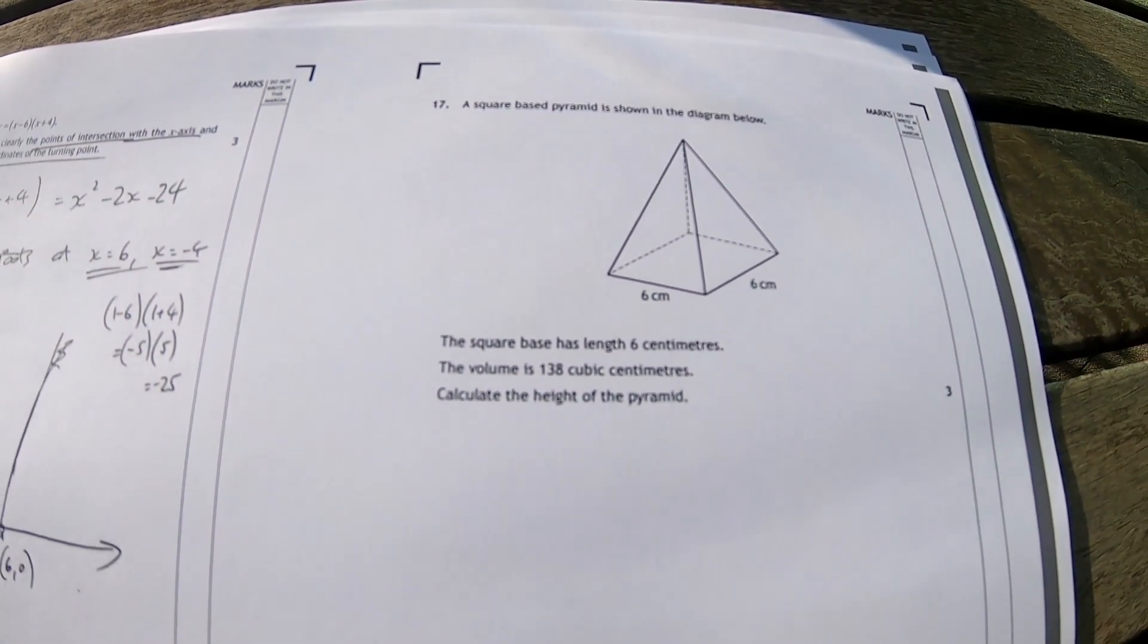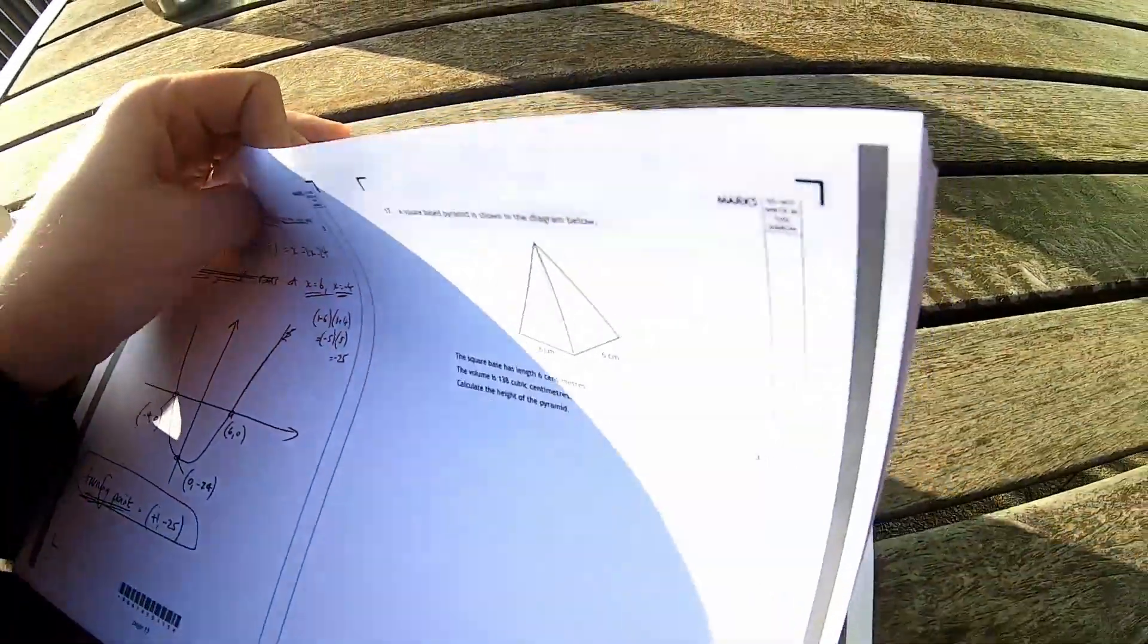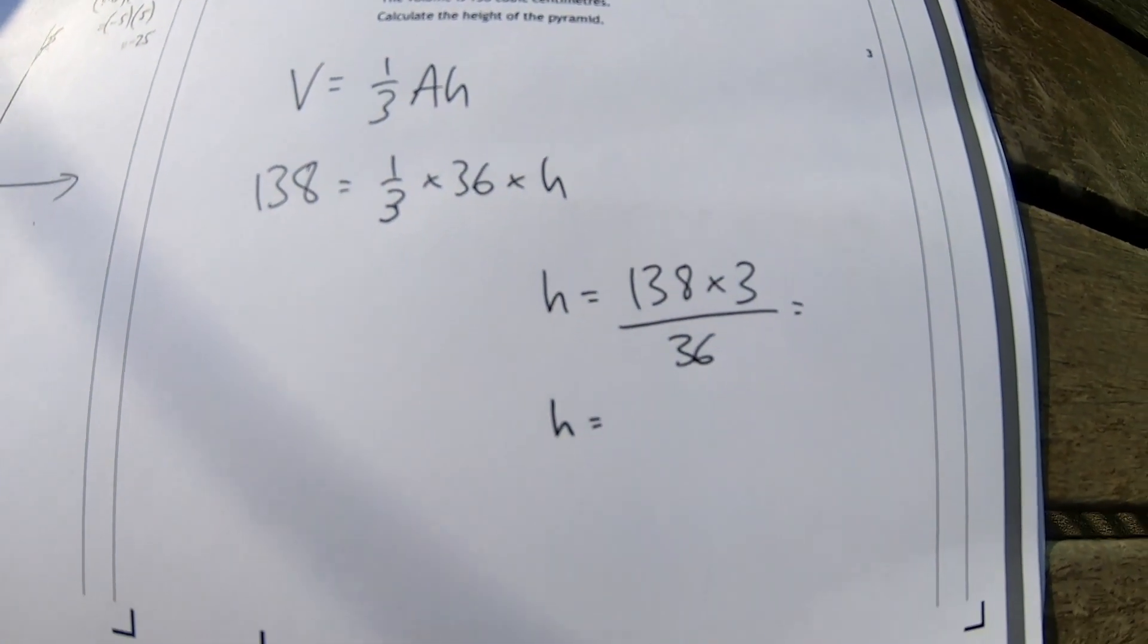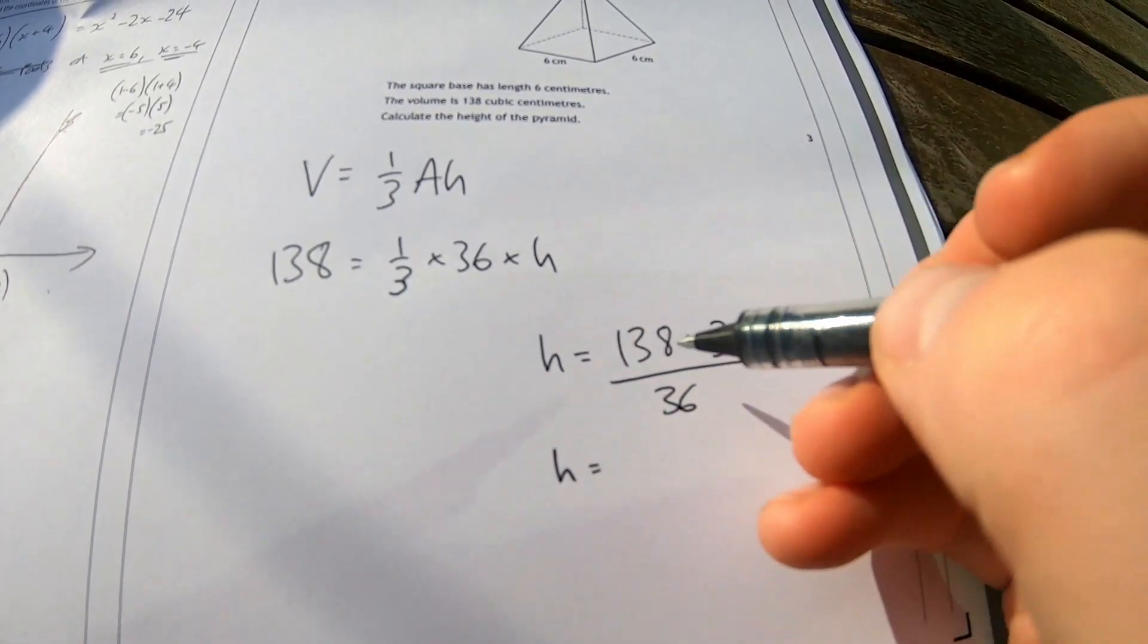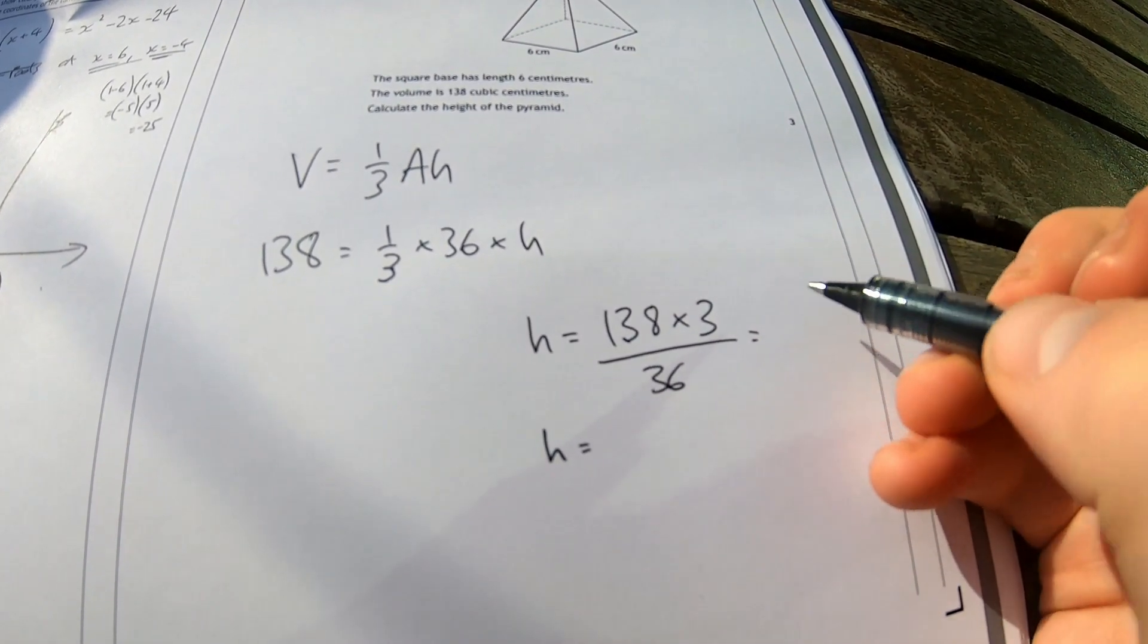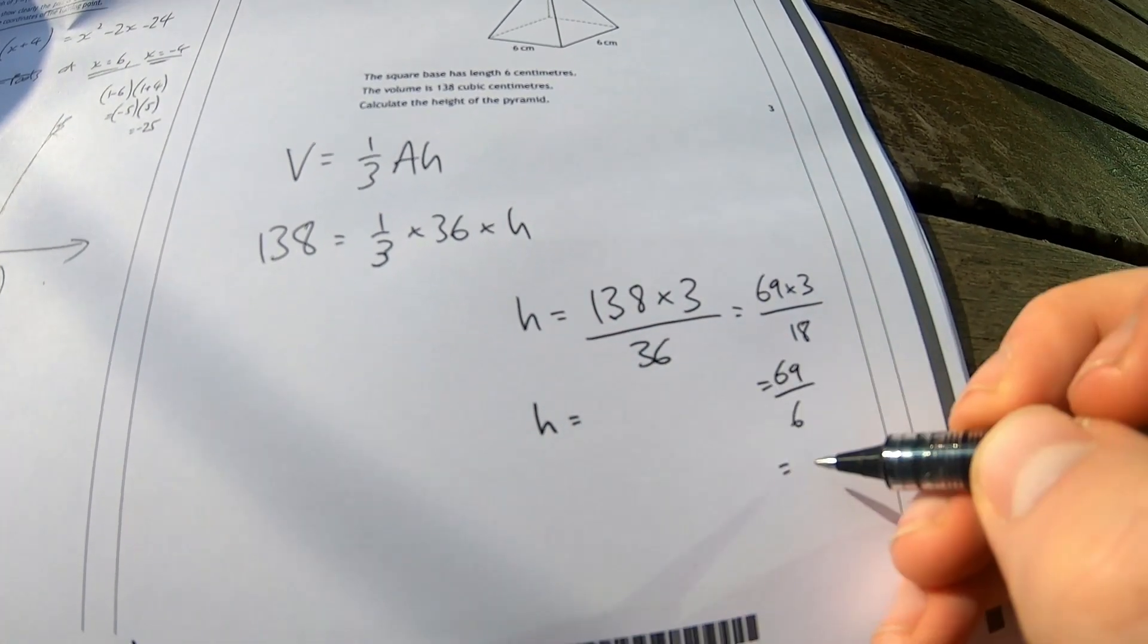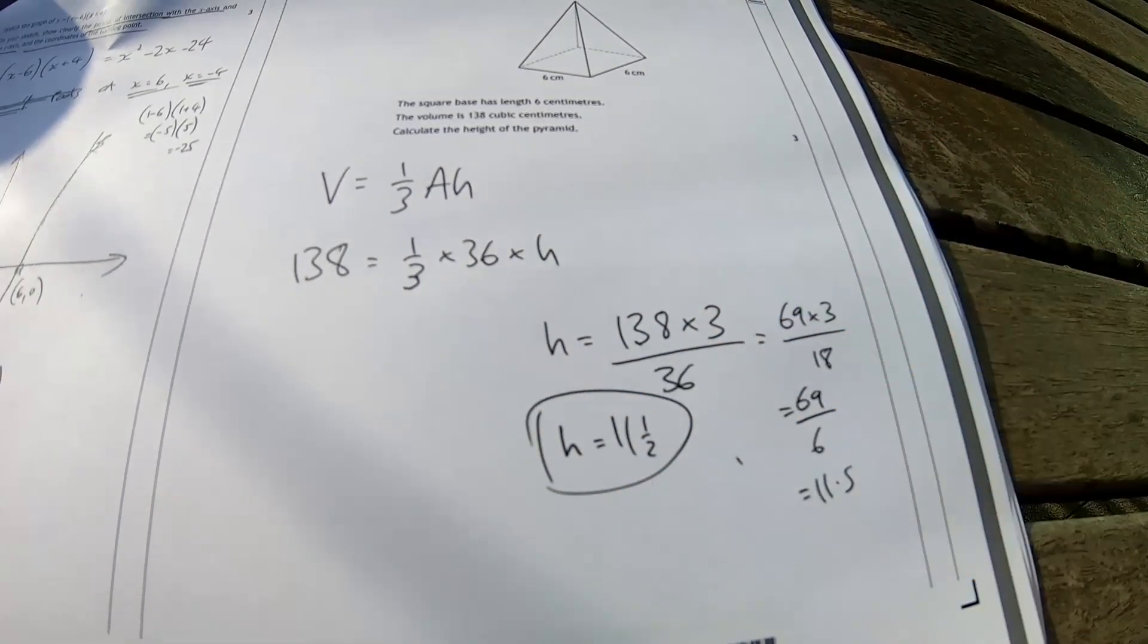Square base pyramid is shown in the diagram below. Calculate the height of the pyramid. There's a formula for that. Volume of a pyramid. I've just got to evaluate this expression now by hand. Slightly annoying but never mind. 138. I'm going to divide that by 2 first of all so that's going to give me nearly 70. 69 times 3. I was looking easy now over 18. 11 and a half. Done.